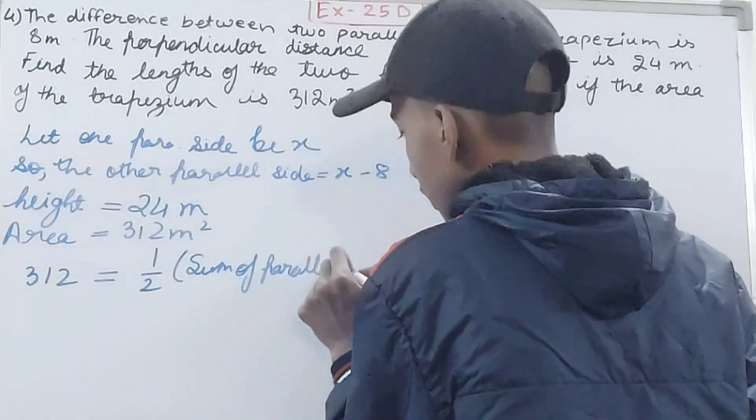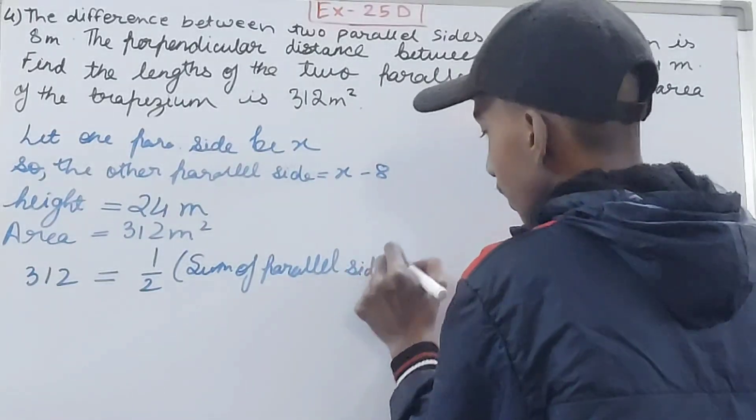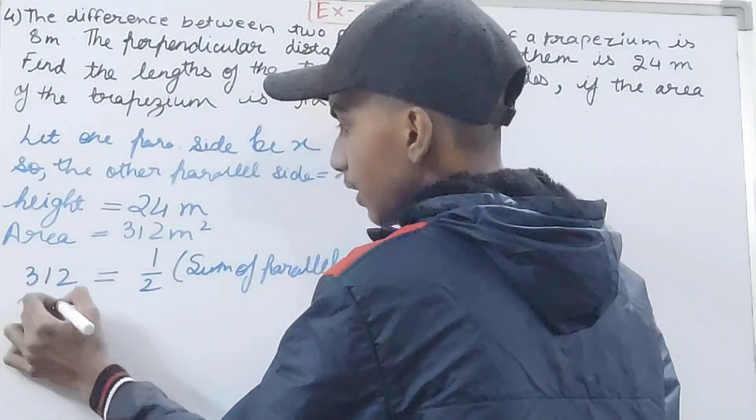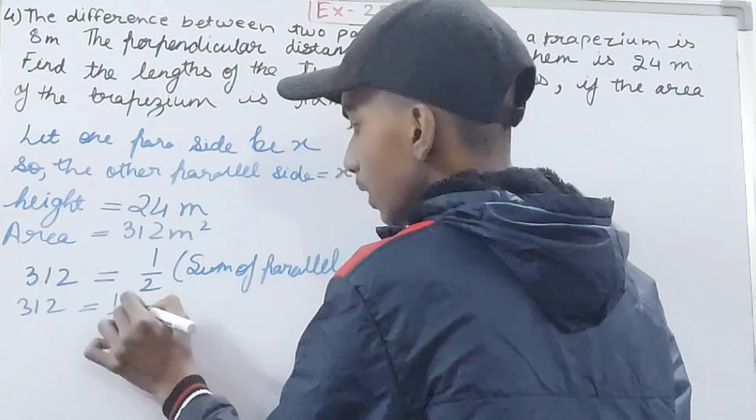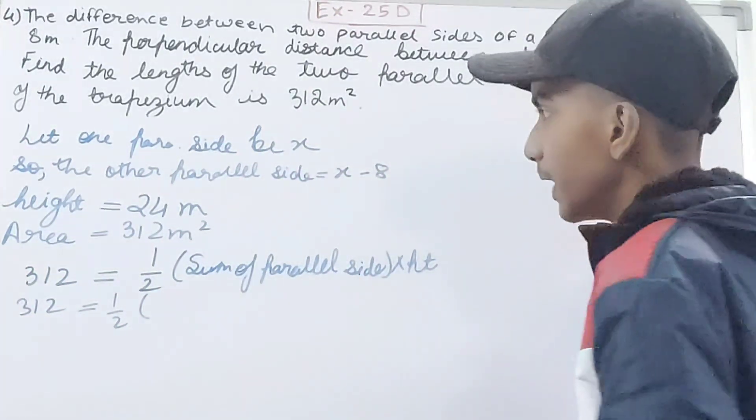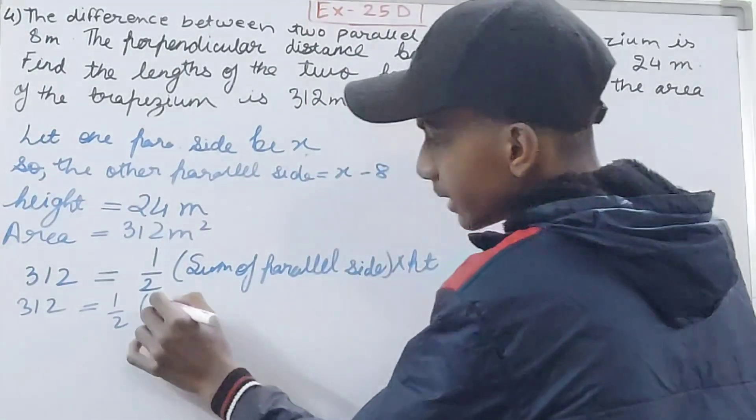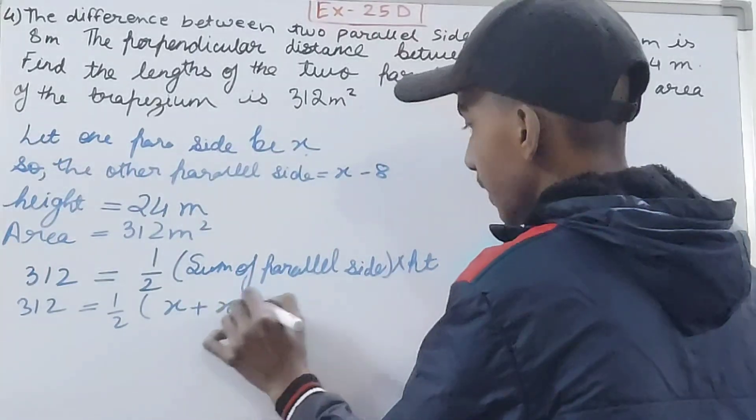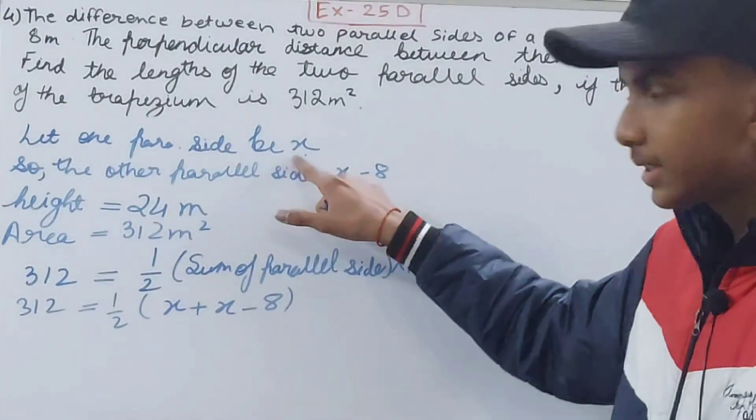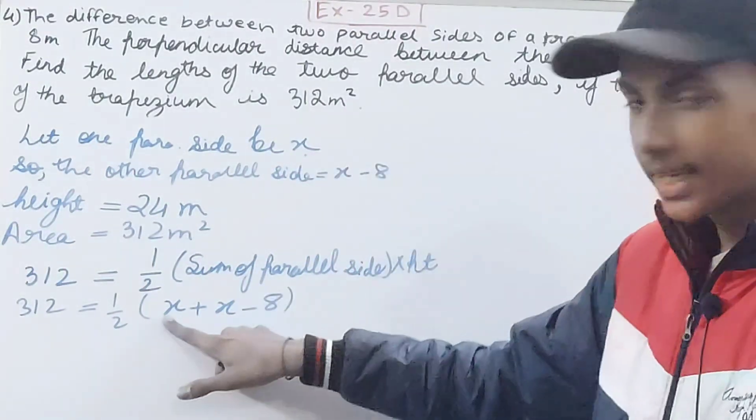That is 1/2 times sum of parallel sides times height. So 312 equals 1/2, and now sum of parallel sides - sum means add the two sides, so X plus X minus 8.